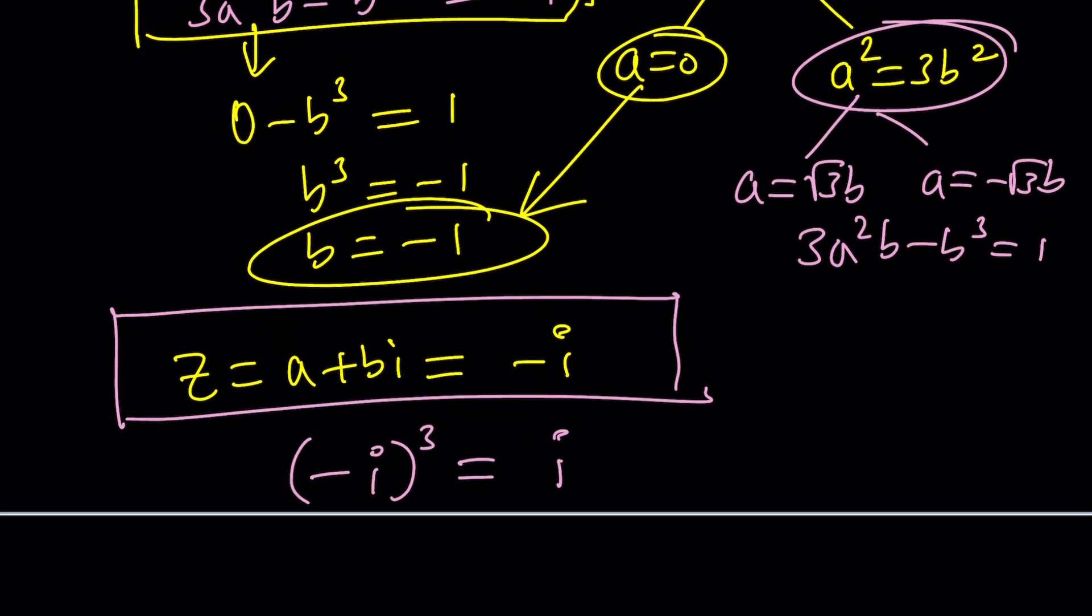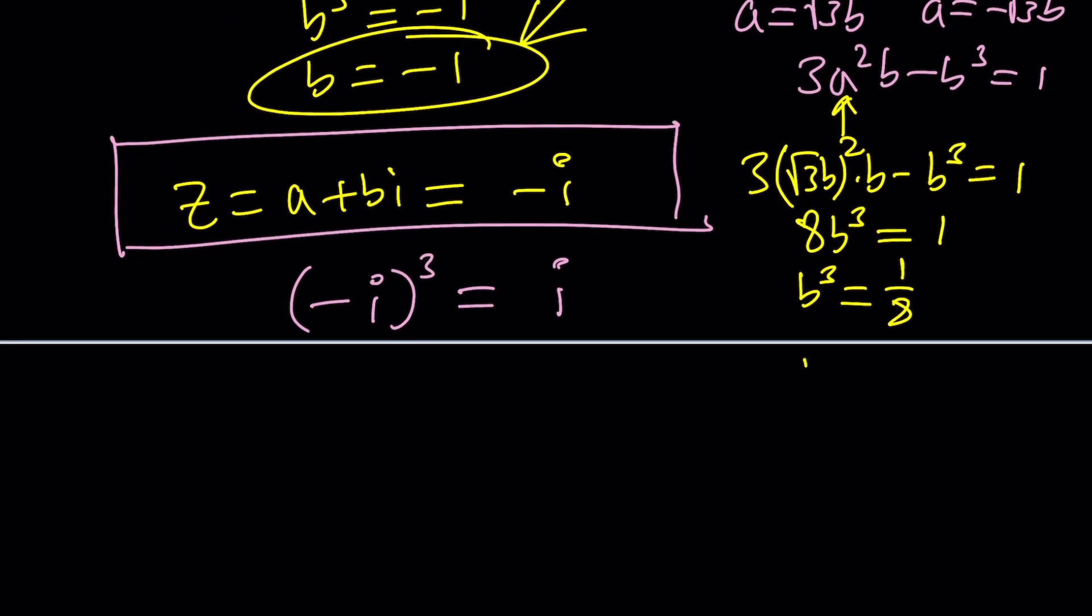Let's replace a with √3·b: 3(√3·b)²b - b³ = 1. This should give me 3b², 9b³, 8b³ = 1, b³ = 1/8. Remember, b is a real number. I keep saying it because complex numbers have 3 cube roots, but real numbers have only 1 cube root. That's one of the b values. And guess what? The other b value is probably going to be -1/2, right? But let's do it.